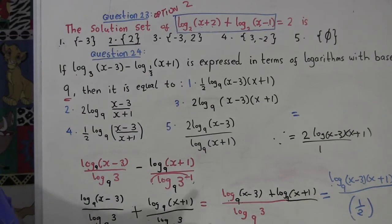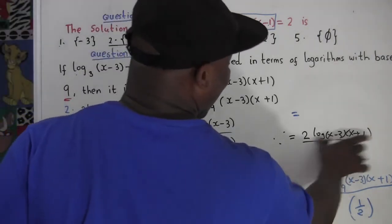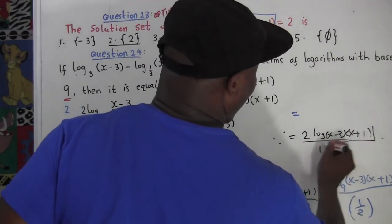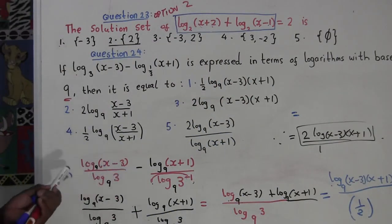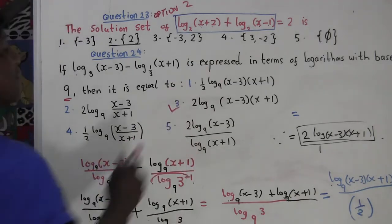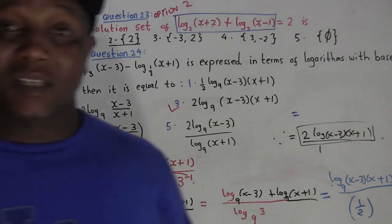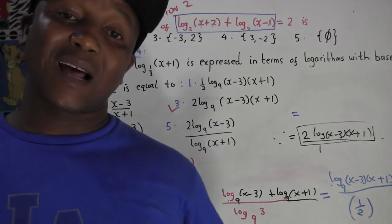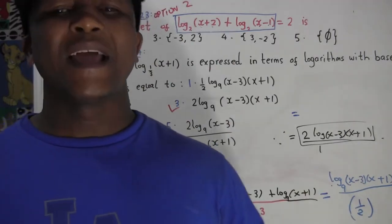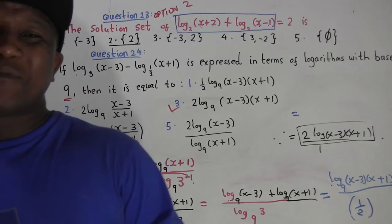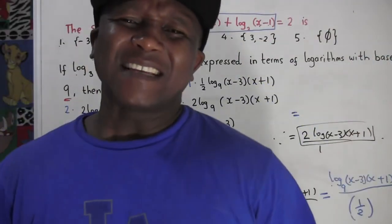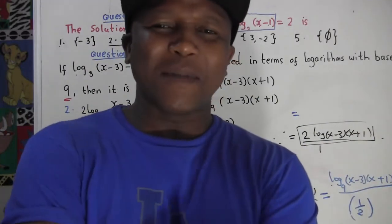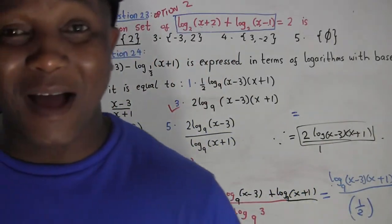Dividing by one half means multiplying by 2, so the final answer is 2 log base 9 of (x minus 3)(x plus 1). That's our answer — option 3. Make sure you subscribe and share the channel. Peace, I'm out.